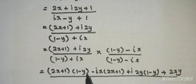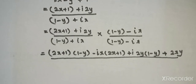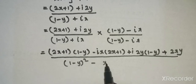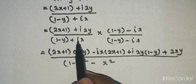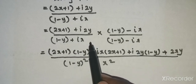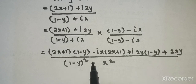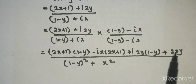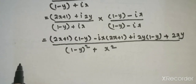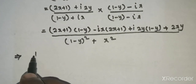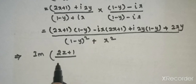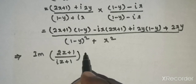The denominator uses the identity a plus b times a minus b equals a squared minus b squared, giving 1 minus y squared minus i squared x squared, which equals 1 minus y squared plus x squared. Now setting the imaginary part of 2z plus 1 divided by iz plus 1 equal to 0.